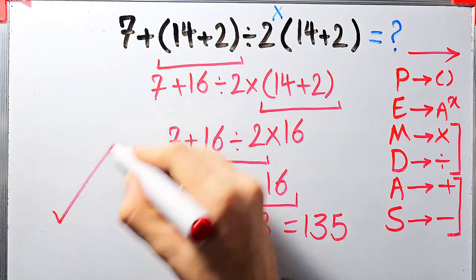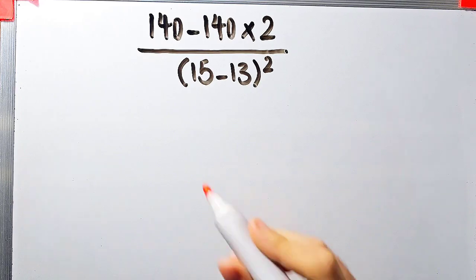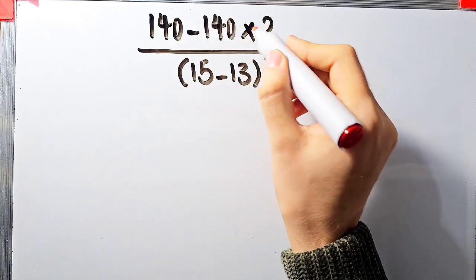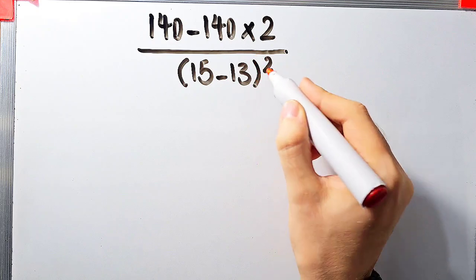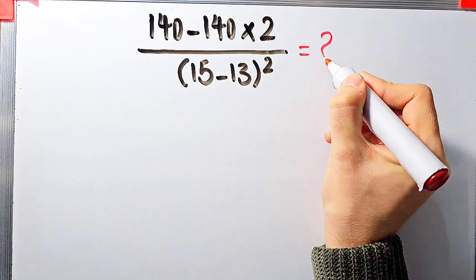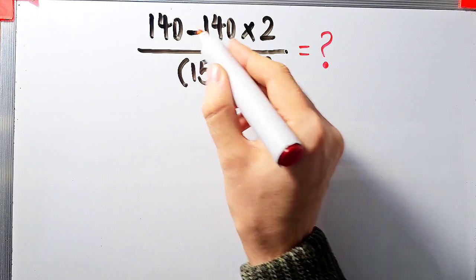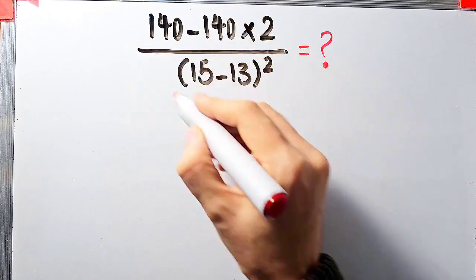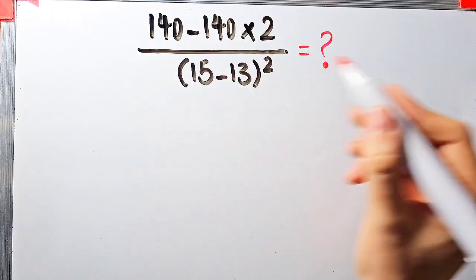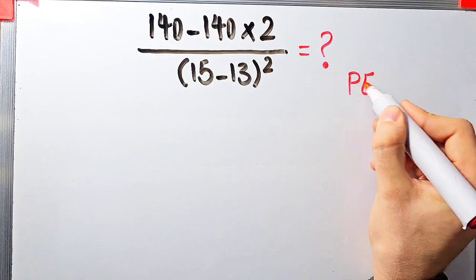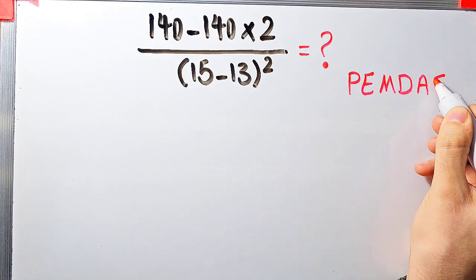Let's solve another question about PEMDAS rule. We have: 140 minus 140 times 2, then over open parentheses 15 minus 13 close parentheses, then all of them to the power of 2. What is the answer of this question? In this question we have subtraction, multiplication, division, parentheses, and exponent. To solve this question we need to follow the PEMDAS rule — if you don't pay attention to this rule you get the wrong answer.